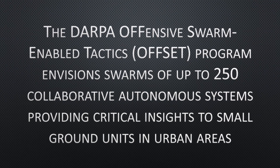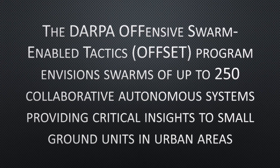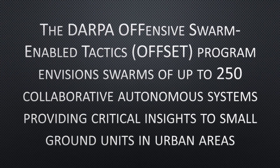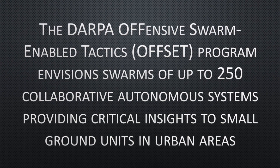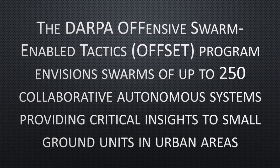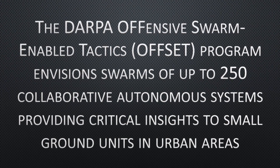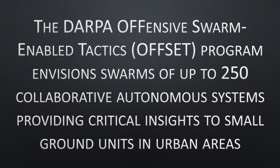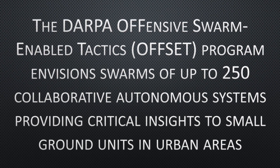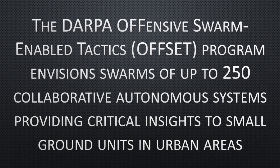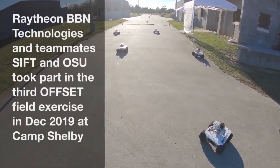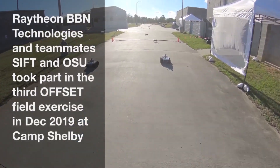CCAST is built upon open source tools such as the Robotic Operating System and PX4, and focuses on practical services for large-scale swarm management, seamless transition between simulation services and real-time operation, and enabling a platform for integrating new leading-edge capabilities developed by other organizations. Together with teammates SIFT and Oregon State University, the Raytheon BBN Technologies Unmanned Innovations Lab participated in the third of six planned field experiments.